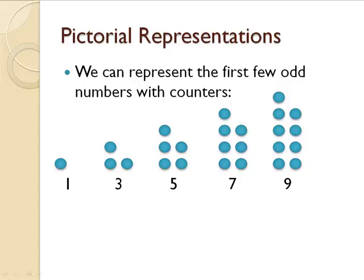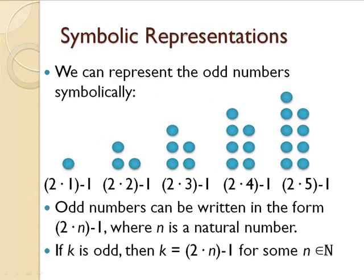Let's do the same sort of things with odd numbers. Pictorially, we can have 1, 3, 5, 7, and 9. And these sort of look like the even numbers, but something's been taken away. So 1 could be 2 times 1, the even number 2, minus 1. And 3 would be 2 times 2, minus 1. And 5 would be 2 times 3, minus 1.